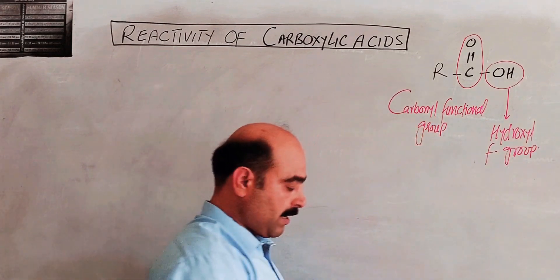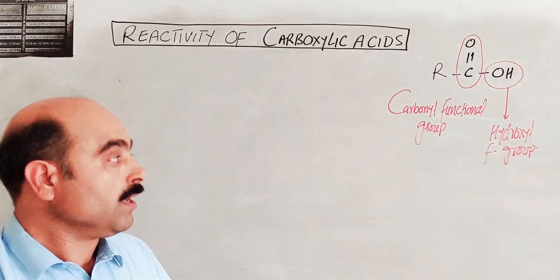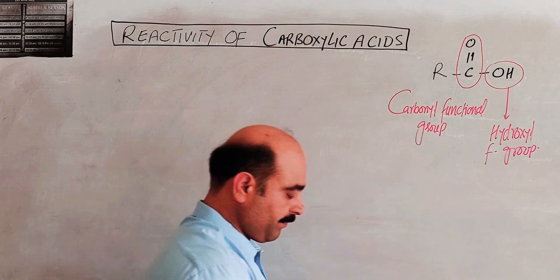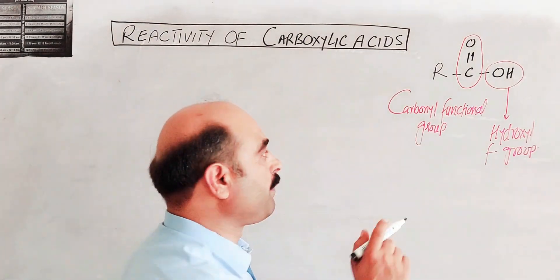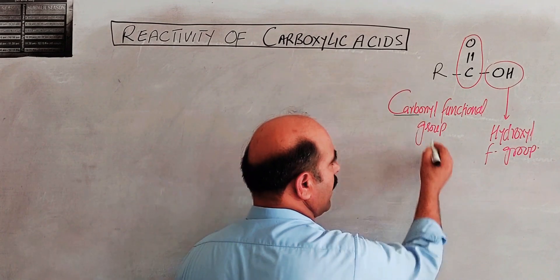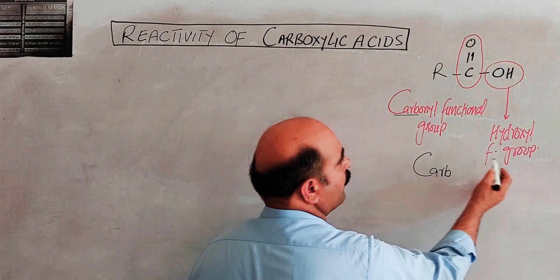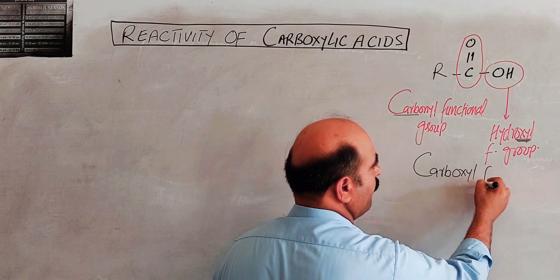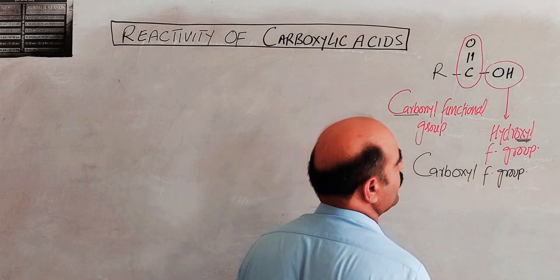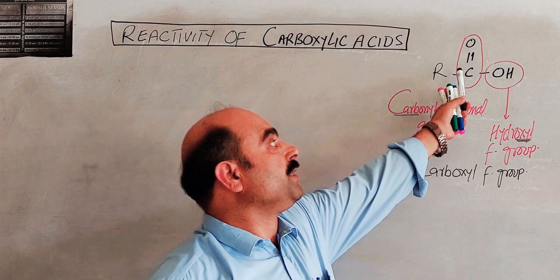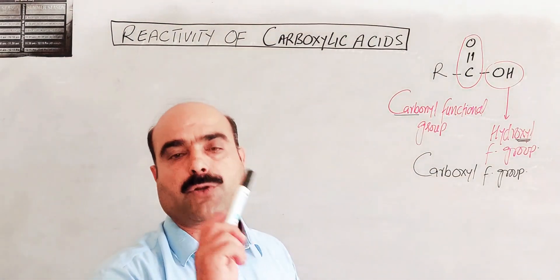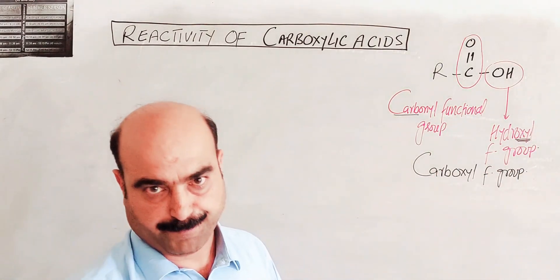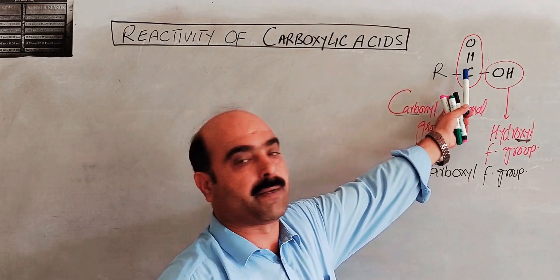The overall carboxyl group is a combination of two functional groups: carbonyl and hydroxyl. The carboxyl functional group is a combination of a carbonyl and a hydroxyl functional group. The reactivity is determined by both of these functional groups, giving an overall reactivity to the carboxyl group.